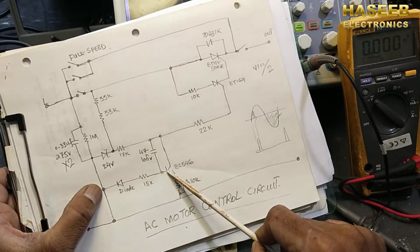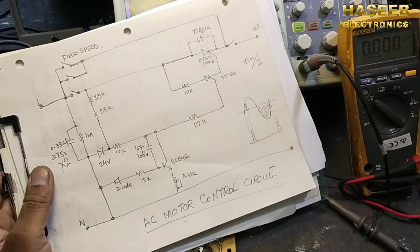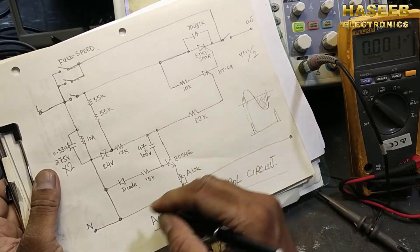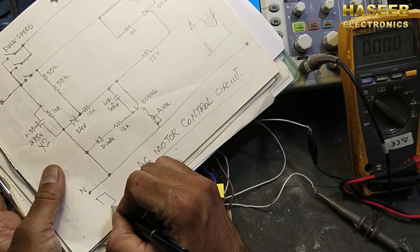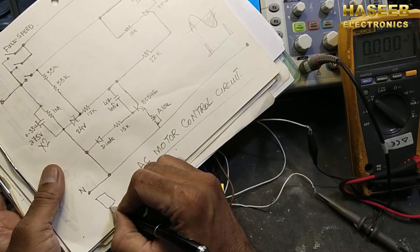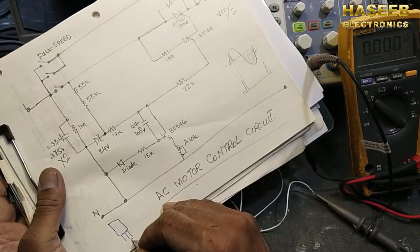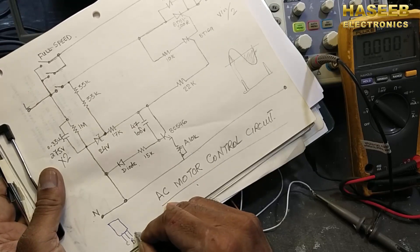We can use BC546, so BC546, or we can use any transistor with this voltage range: base, collector, emitter.